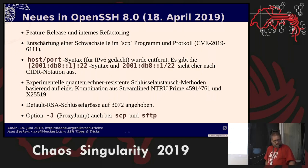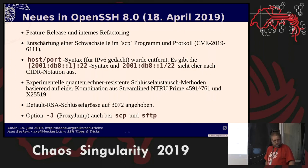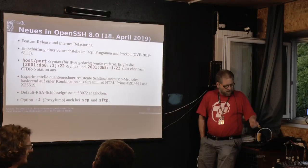One security fix: they dropped an old syntax used in the SSH daemon where you could say IP address slash port number. This was meant to help IPv6 users since the colon is already in use there. The established syntax with square brackets works well, and the slash syntax was confused with CIDR network masks, so they kicked it out. This is also the first release with a post-quantum cryptography key exchange included, and they raised the default RSA key length to 3K.